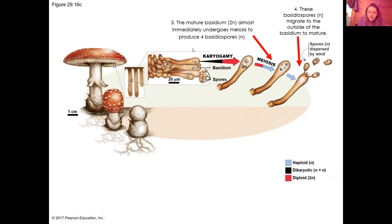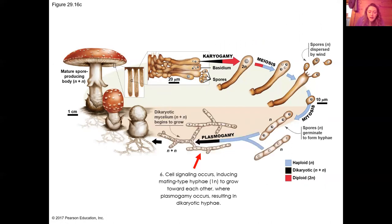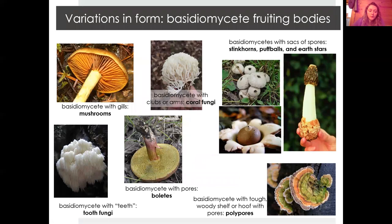The zygote undergoes meiosis and produces basidiospores, which are 1n. These spores form at the end of the club-like basidium — there are usually four. Via mitosis, the spores grow and spread, spending most of their early life as 1n developing hyphae. Plasmogamy occurs in the younger, immature form, making it n+n, and then remember the mature adult form spends most of its life in n+n — so plasmogamy will have already occurred.